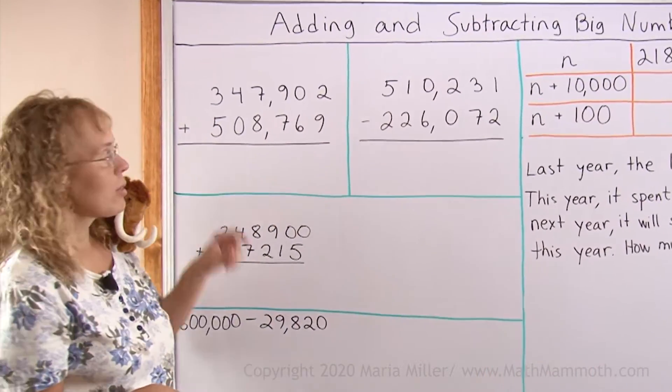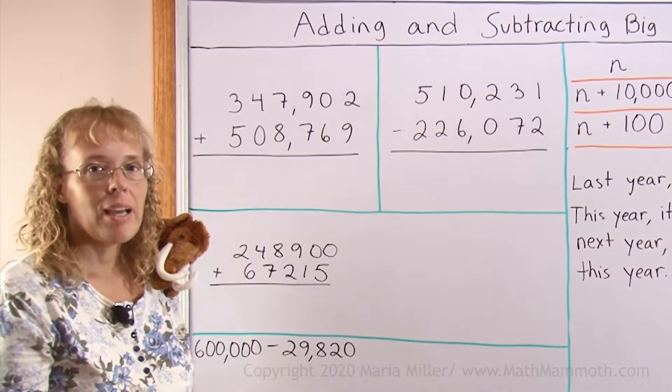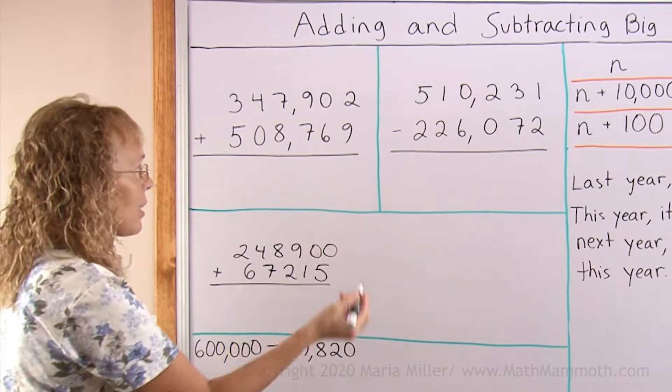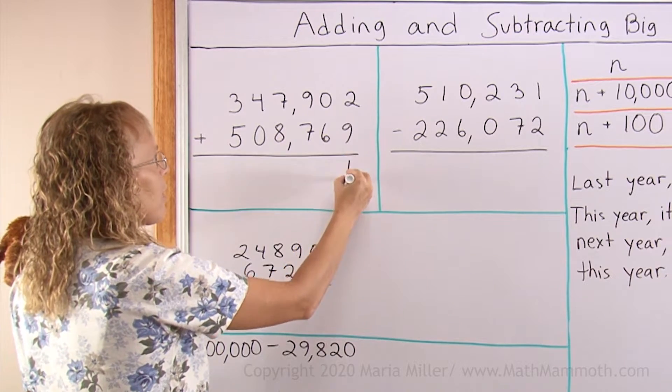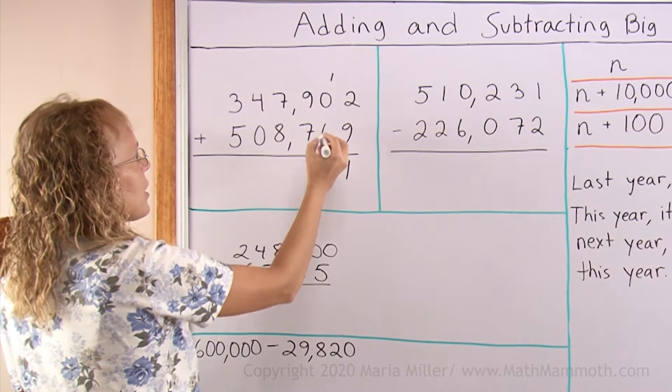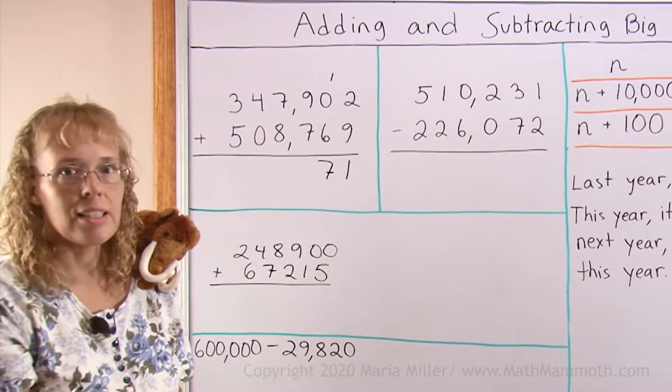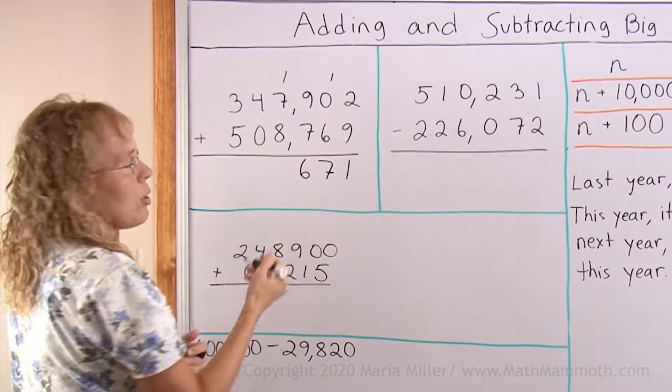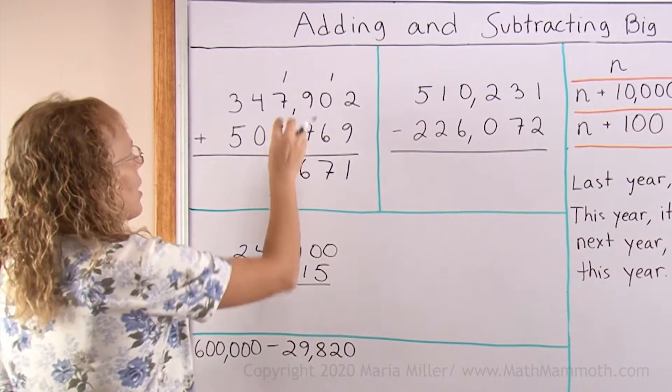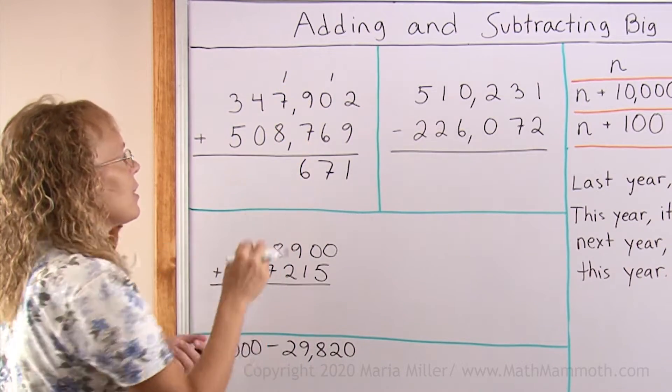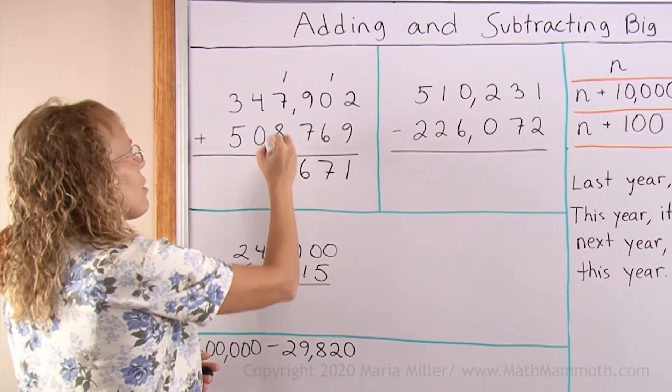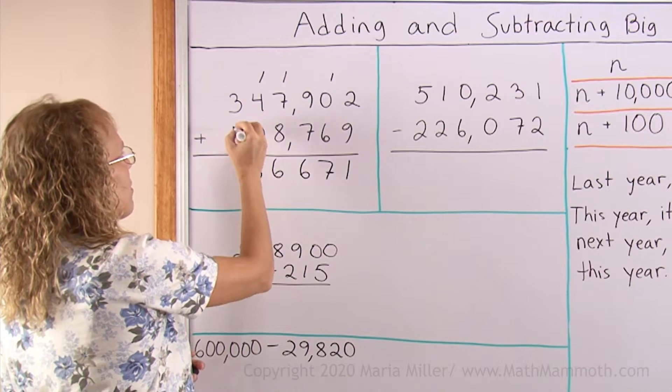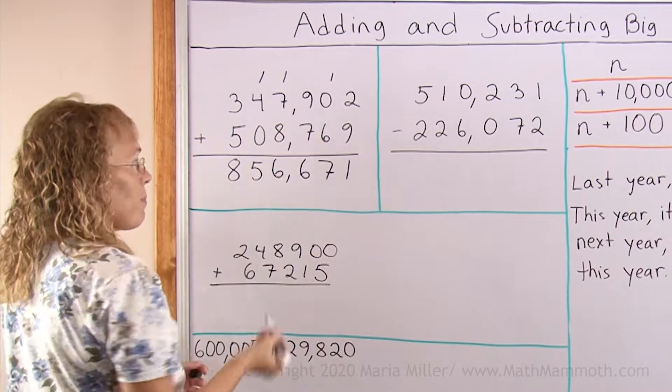Now, addition of big numbers is really easy. It goes the same way as you're used to adding smaller numbers. All we do is add 2 plus 9 here in the ones. It's 11, so we carry over to the tens. 1 plus 6 is 7, 9 plus 7 is 16. Again, we carry 6 here and 1 here. Or you might call it regrouping, either way. Then we add 1 plus 7 plus 8, 16. Again, we carry or regroup over here. And 1 plus 4 is 5 and 3 plus 5 is 8. All done. Very easy.